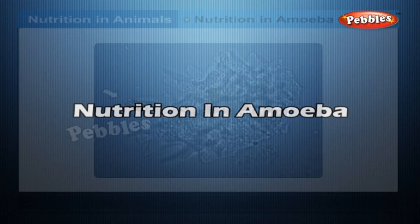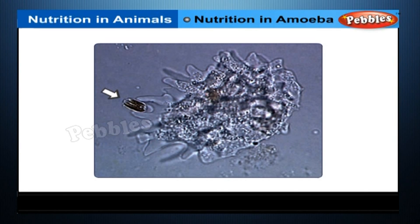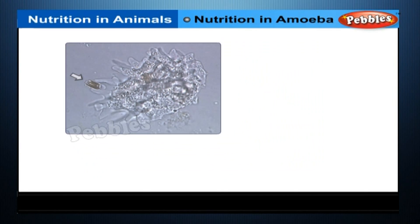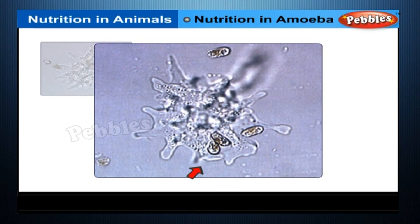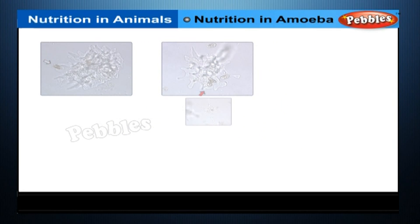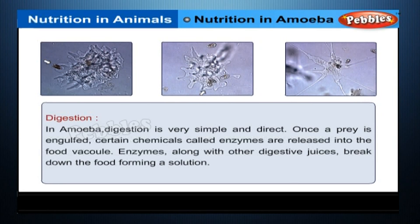Nutrition in Amoeba. Amoeba are organisms made up of a single cell, usually found in ponds and ditches. Their food consists of the microscopic plants and animals floating in these waters. When amoeba comes into contact with one of these organisms, it flows around the organism, forming a cup-shaped projection called a food cup or food vacuole, which completely encloses and ingests the food. This mode of nutrition is called phagocytosis, meaning cell eating.